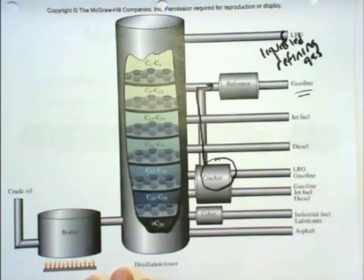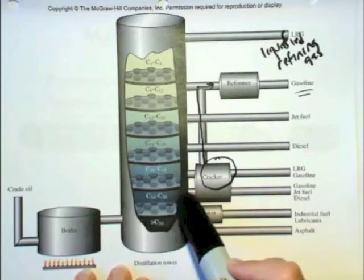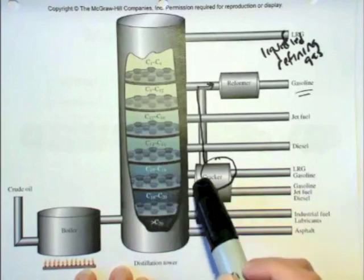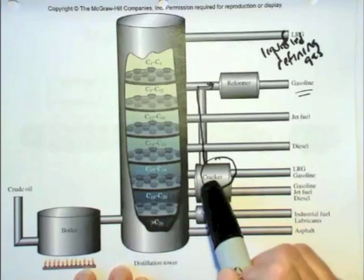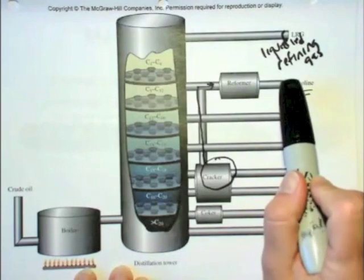So what happens is then we get these heavier fractions, and we crack them to make them smaller so that we can formulate them into gasoline.